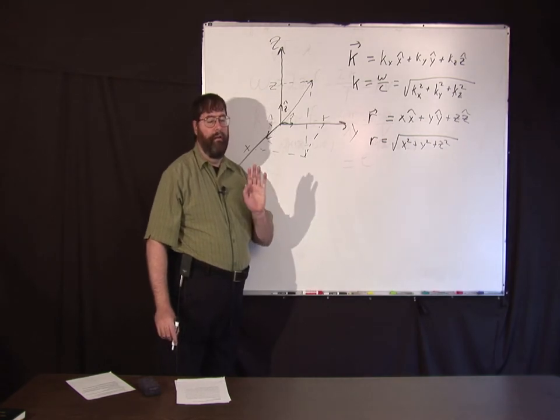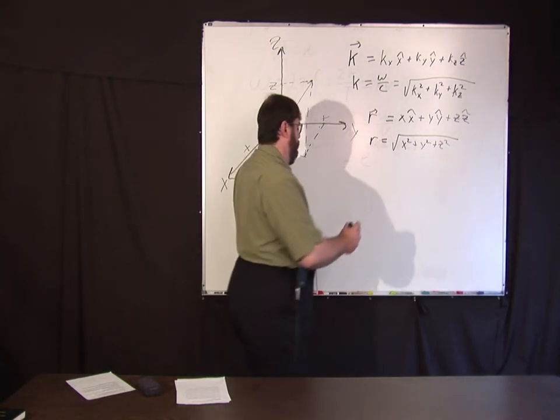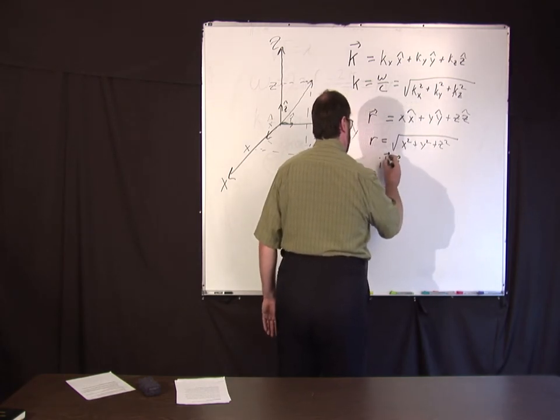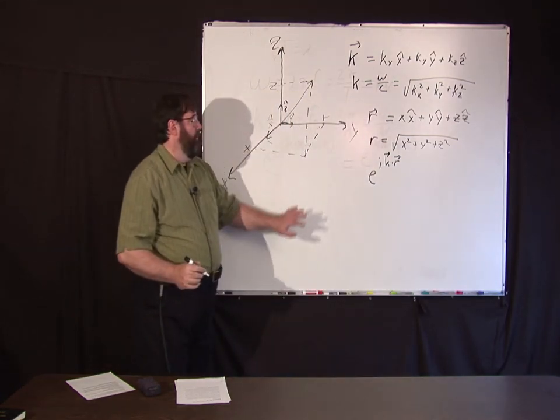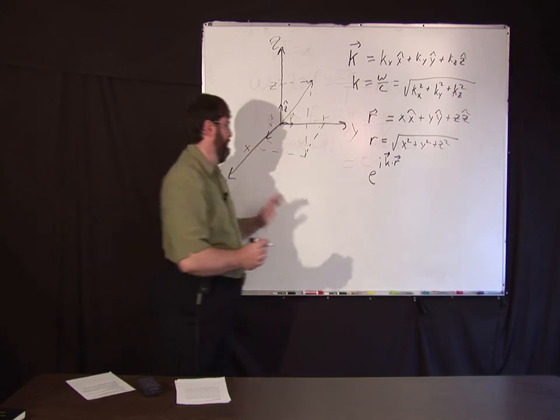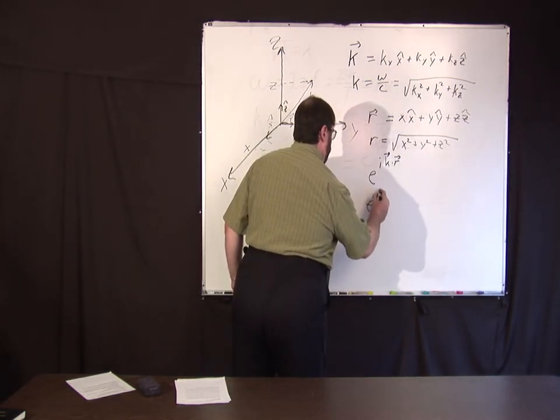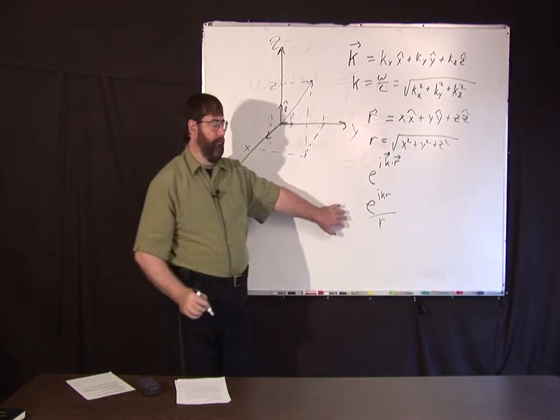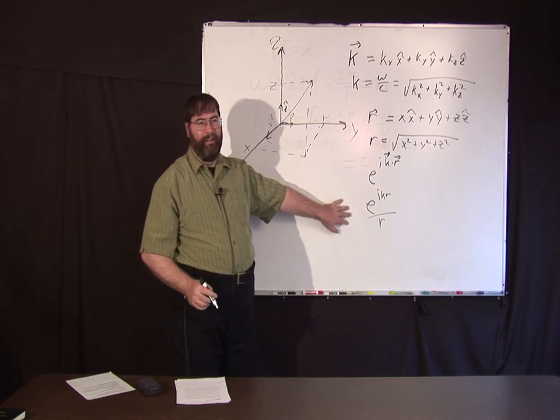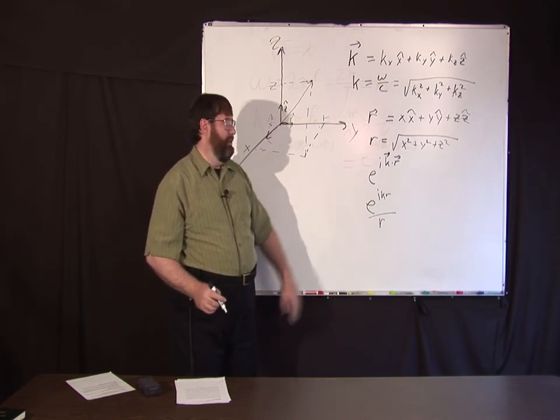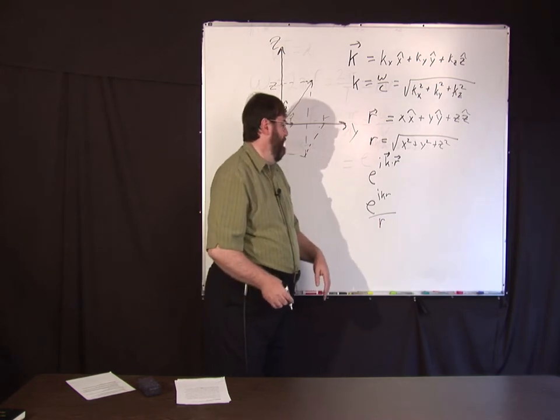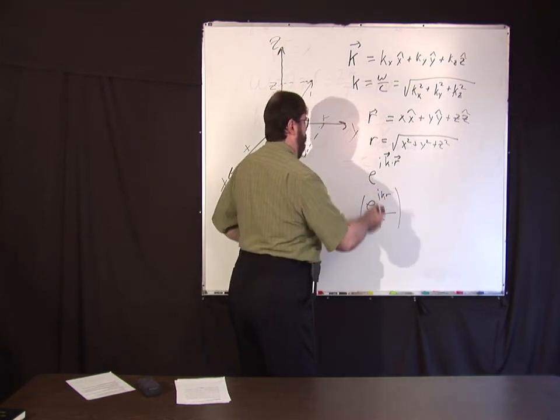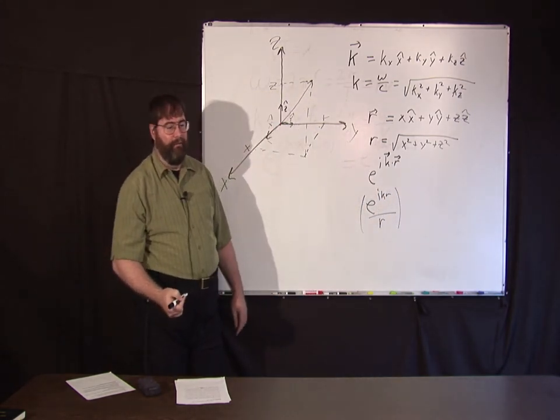And then the general form of a plane wave, I claim, was e to the i k dot r, which is correct. Now the mistake I made last week is I don't know why I wrote it that way: a spherical wave is e to the ikr over r, where these are magnitudes not vectors. That was the mistake last week—I was thinking magnitude and I wrote vector and said vector. Anyway, this is the general equation of a spherical wave and this is the general equation of a plane wave.